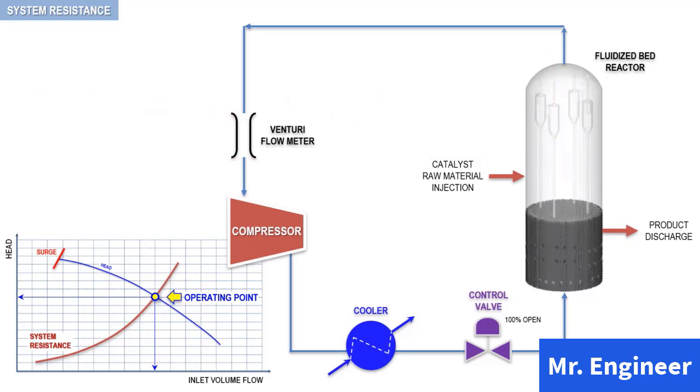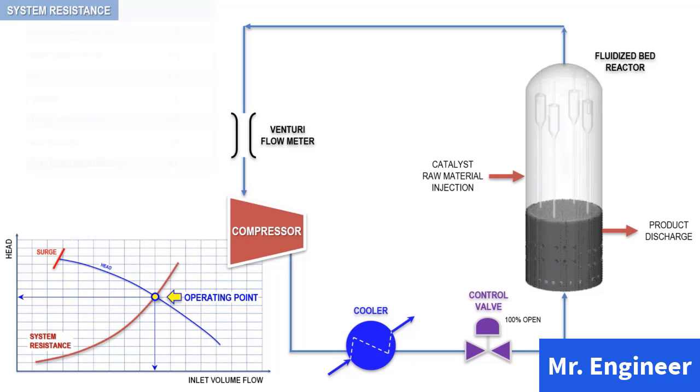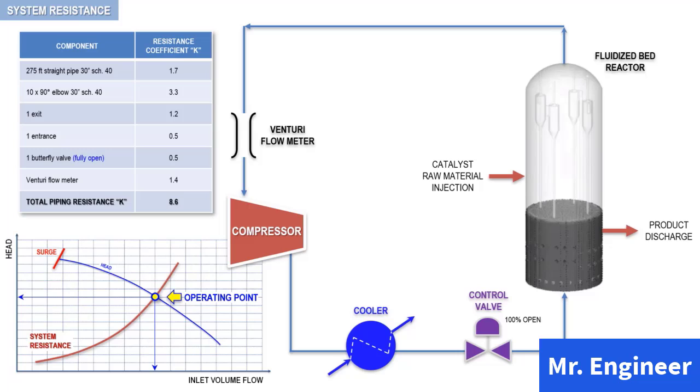Piping losses account for the frictional losses or pressure drops due to pipes, fittings, valves, and instrumentations, such as the venturi flow meter that you can see here. In this table, I have listed all the components making up the piping system with their corresponding resistance coefficient. In this example, the total piping resistance coefficient when the control valve is fully open is 8.6.